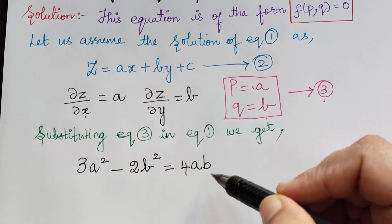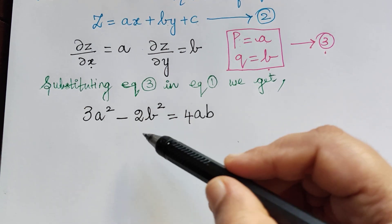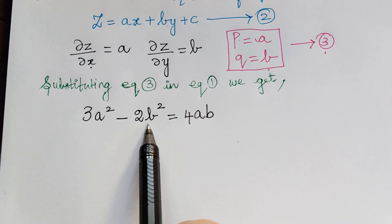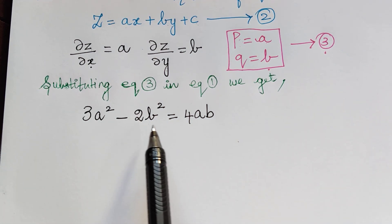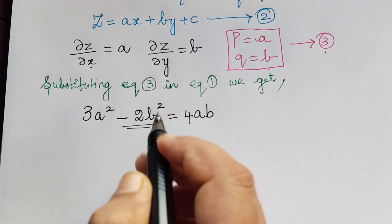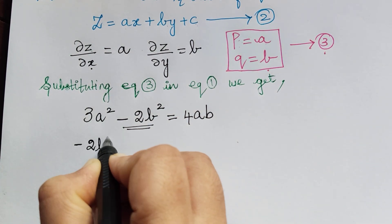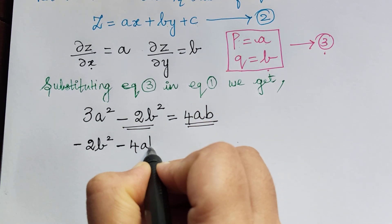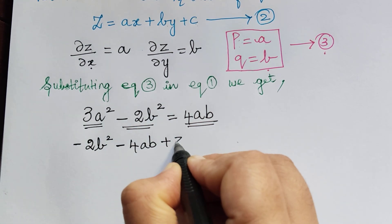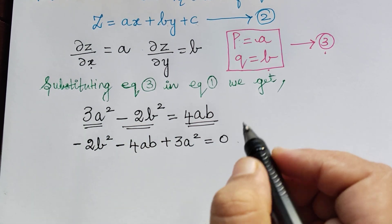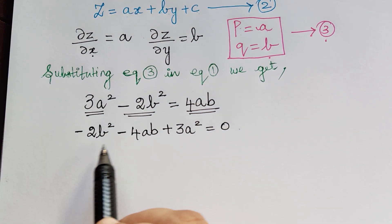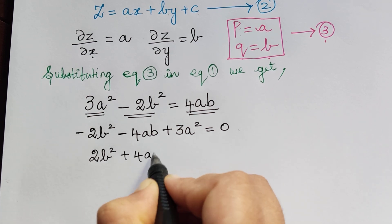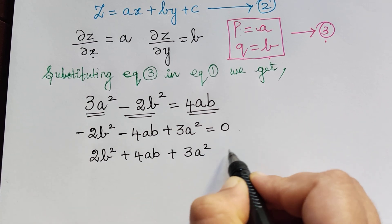From this equation we have to solve for b. Bringing 4ab to the left, we see that we have b² here, so this can be written as a quadratic equation in b. It becomes minus 2b² minus 4ab plus 3a² equals 0. Multiplying throughout by minus 1, we get 2b² plus 4ab minus 3a² equals 0.